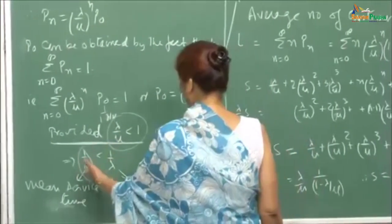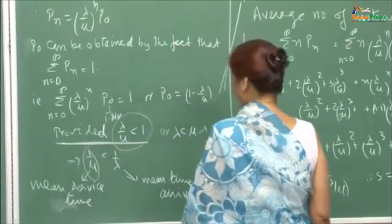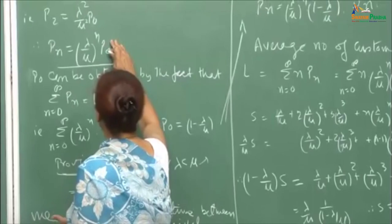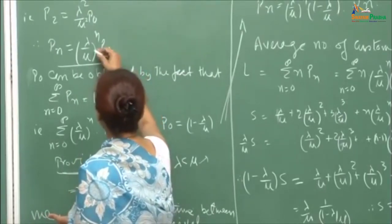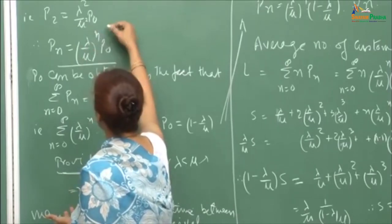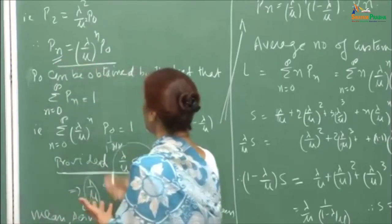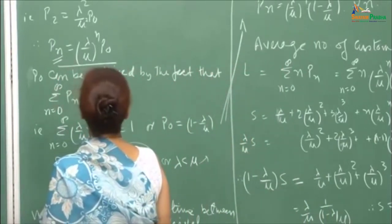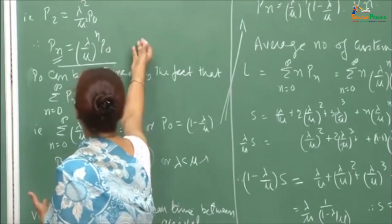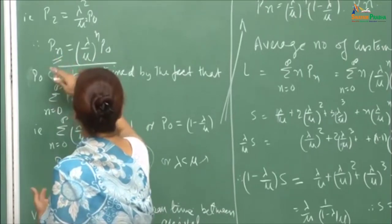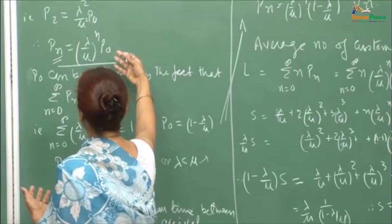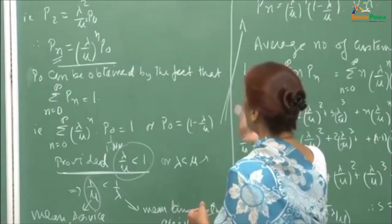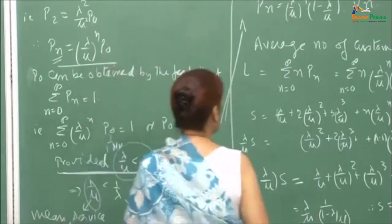If you want to find the average number of customers in the system — when designing a facility, you base it on the average number of customers — then L = Σ(n=0 to ∞) n × p_n. Substituting for p_n, this becomes a sum involving the arithmetico-geometric series Σ n (λ/μ)^n. The way to sum such a series is to write S, then write (λ/μ)S shifted one position, subtract to get a geometric series. The result is S = (λ/μ) / (1 − λ/μ)². Therefore L = λ/(μ − λ).